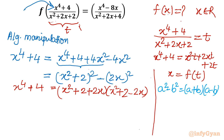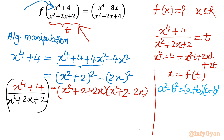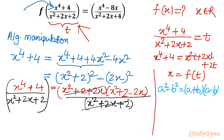Now if we look at our LHS, the denominator is x² + 2x + 2. I will divide both sides by x² + 2x + 2. This is the functional variable written in the bracket. We also divide the RHS by x² + 2x + 2. We can cancel these two matching terms, but before that we must confirm that x² + 2x + 2 is not equal to zero.